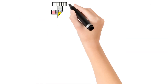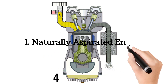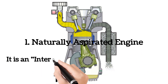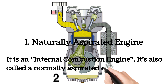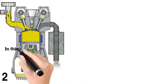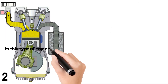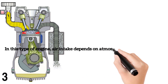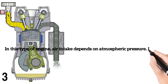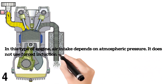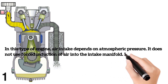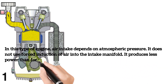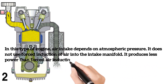Number one: naturally aspirated engine. It is an internal combustion engine, also called a normally aspirated engine or an NA engine. In this type of engine, air intake depends on atmospheric pressure. It does not use forced induction of air into the intake manifold.